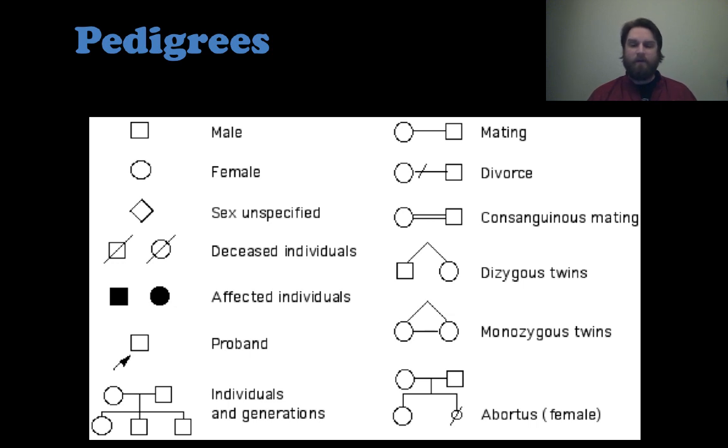And then if there's an aborted fetus, you would just draw a small circle or square and put a line through it. But the main ones I want you to understand are the mating lines and then the twins. Those are really, really important. So check these out and commit them to memory so that you can make your own pedigrees.